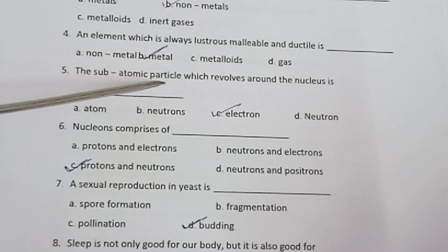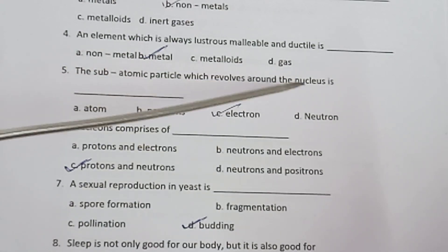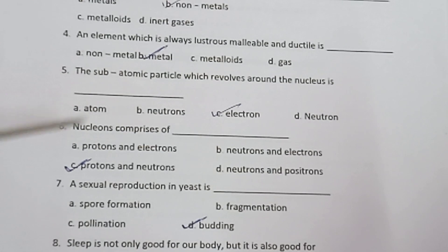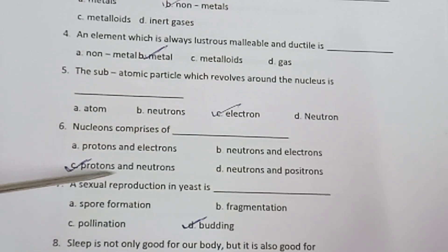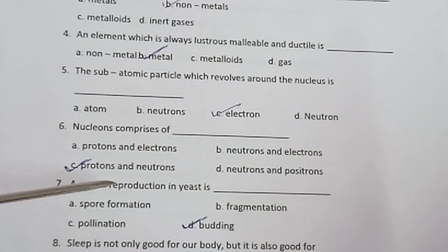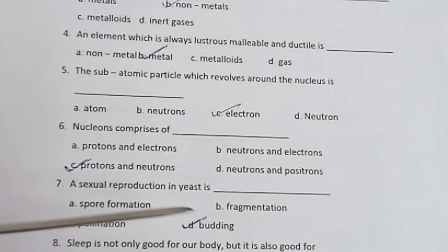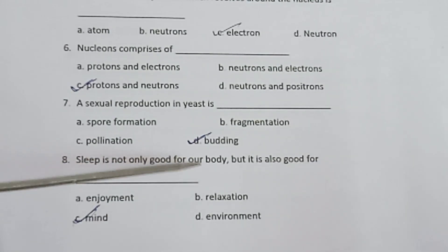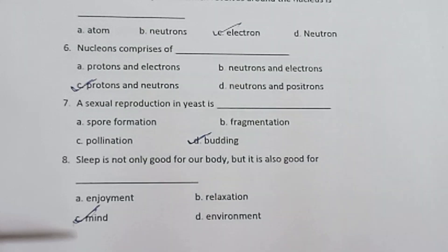Question 5: The subatomic particle which revolves around the nucleus is an electron. Question 6: Nucleons comprise protons and neutrons. Question 7: Asexual reproduction in yeast is budding.